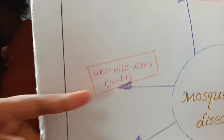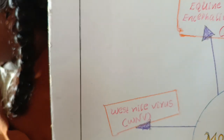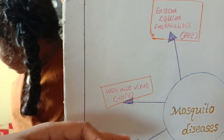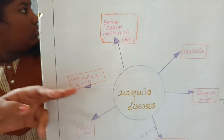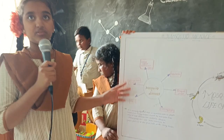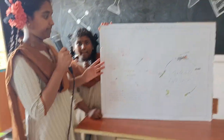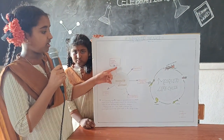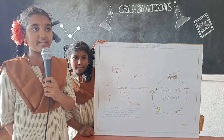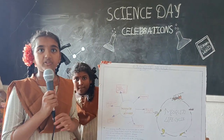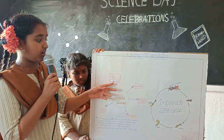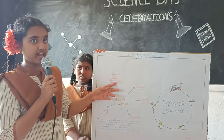West Nile virus was first found in an adult woman in 1937 in the West Nile district. It is very rare and the treatment is an emergency requiring immediate health care. Next is Eastern Equine Encephalitis. This is a rare virus caused only by mosquito bites and there is no vaccine for it. It is the rarest virus and it spreads through fever. Thank you.